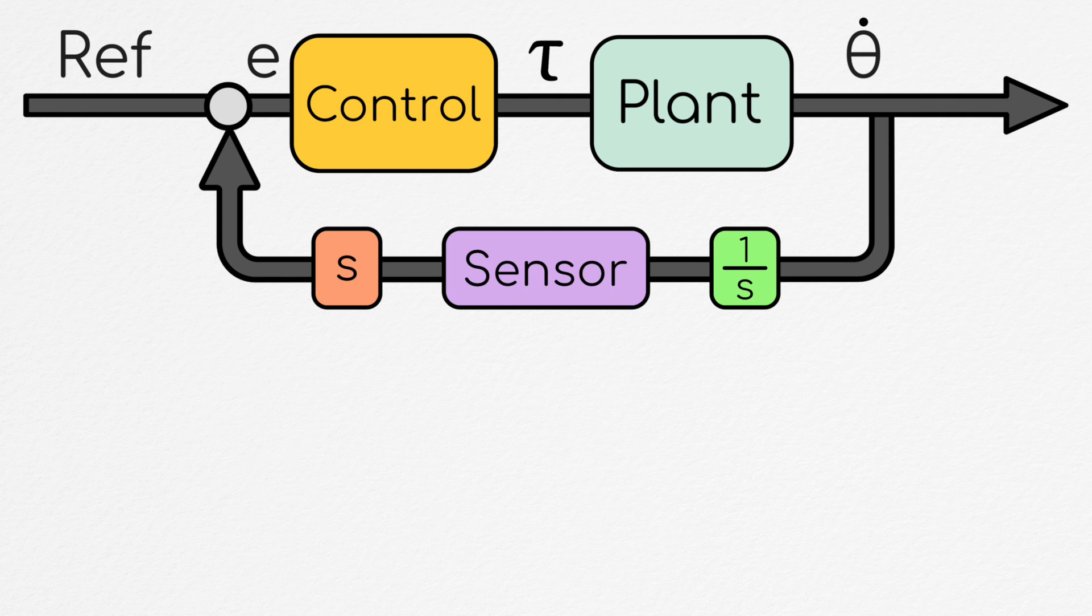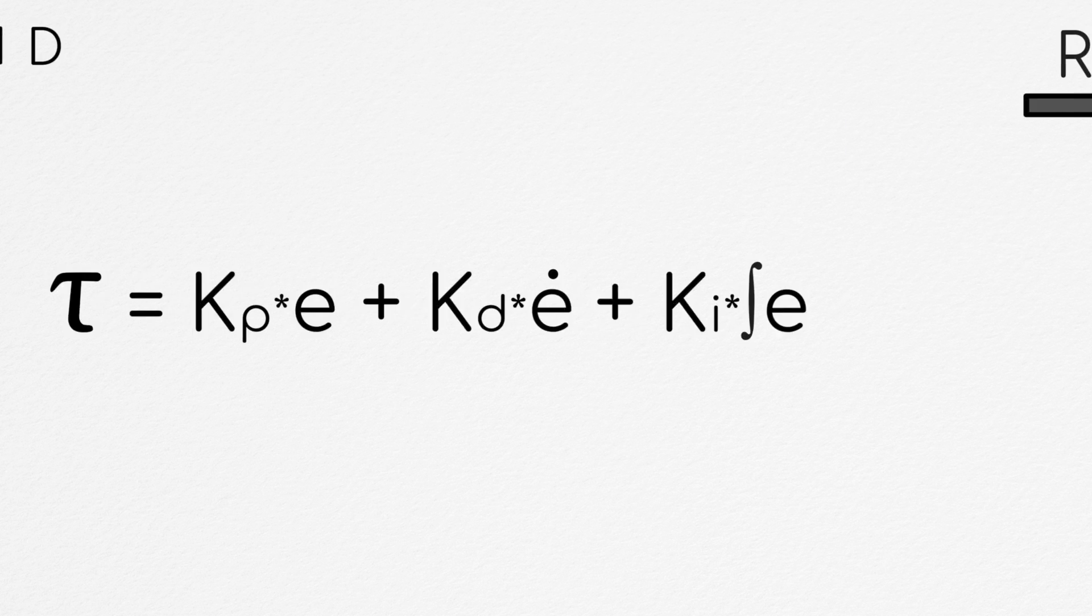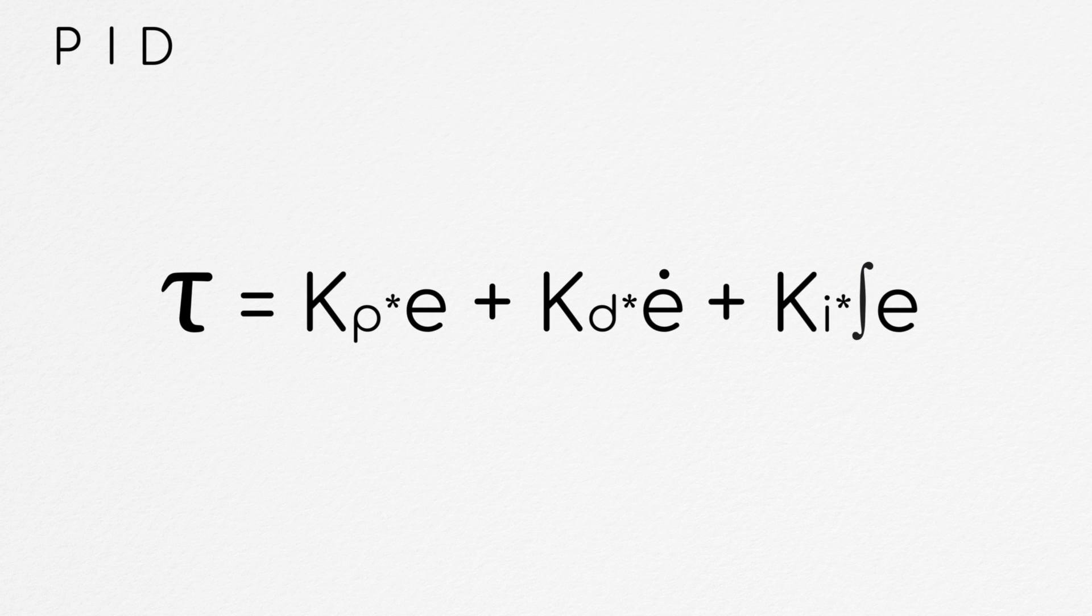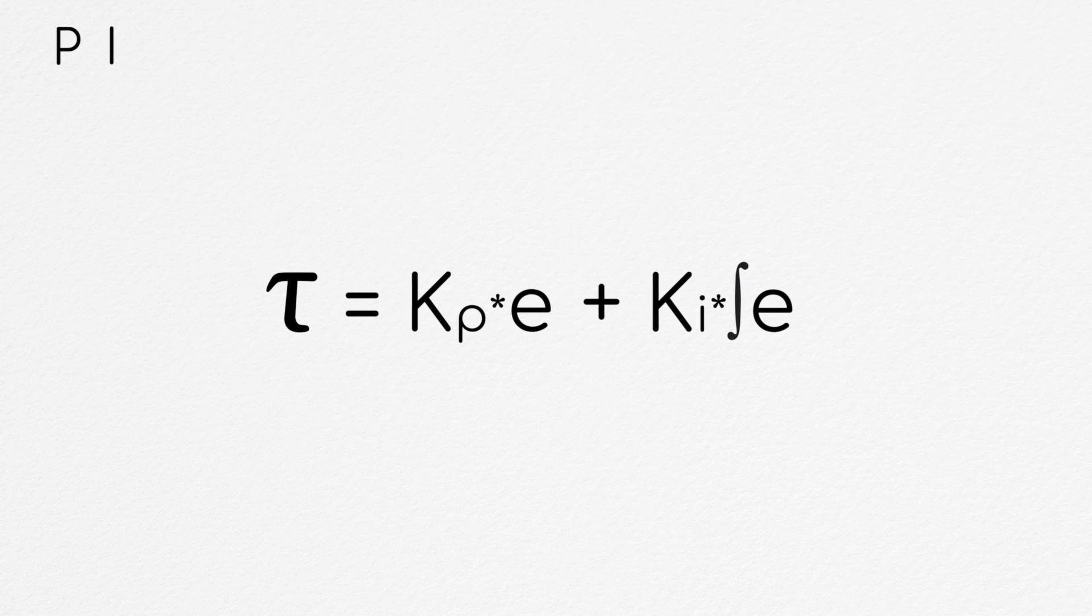This noise can be mitigated to some extent via digital filtering. However, as you add filters, you also add phase lag. For this reason and for simplicity's sake, it's often better to ditch the derivative term and use a PI controller for tracking velocity.